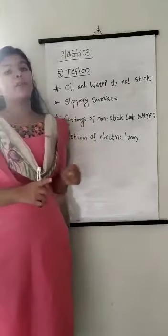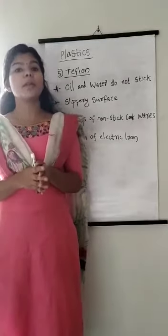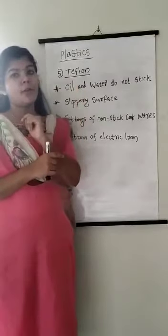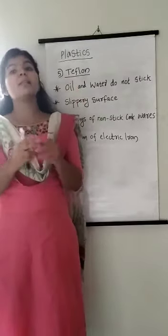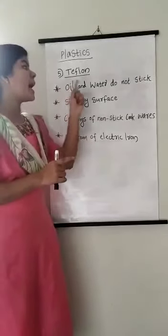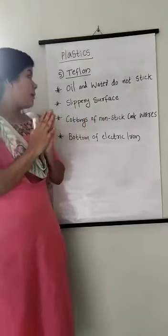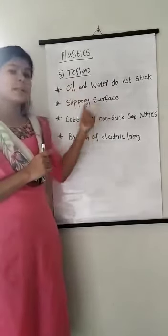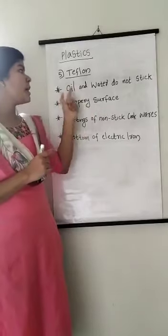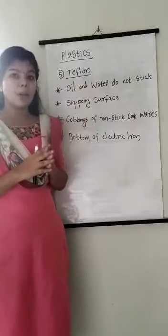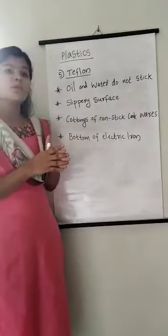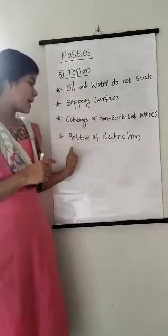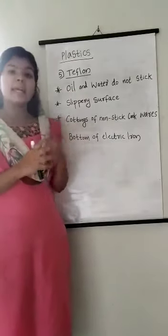The next one is teflon. Students, have you seen non-stick cooking pans in your kitchen? These are all made of teflon, because teflon is a special plastic on which oil and water do not stick — it has a slippery surface. This property is used for making the coatings of non-stick cookware and also for making the bottom of electric irons.